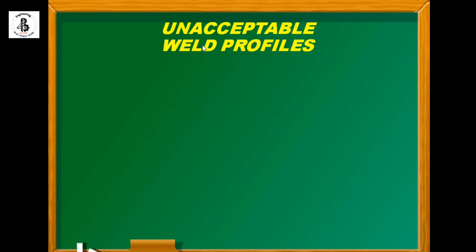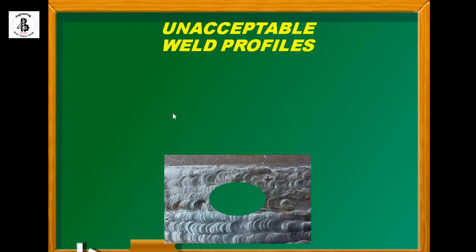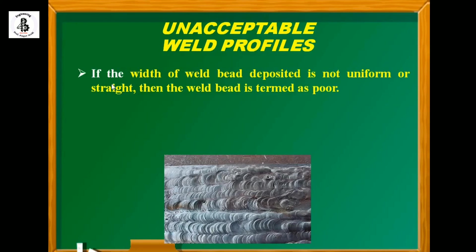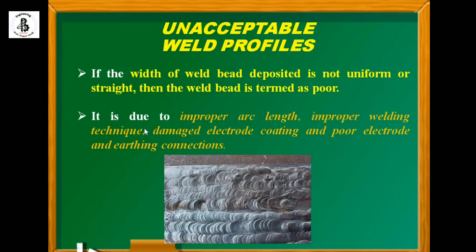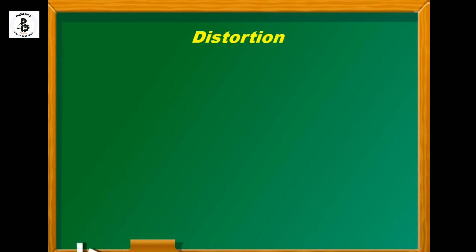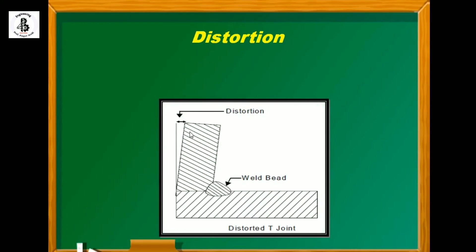Next are unacceptable weld profiles — welding profiles not acceptable for any industry or engineering application. This is due to unskilled operators. If the width of the weld bead deposited is not uniform or straight, the weld bead is termed as pulled. This is caused by improper arc length, improper welding techniques, damaged electrode coatings, and poor electrode and earthing connections, or lack of operator skill.